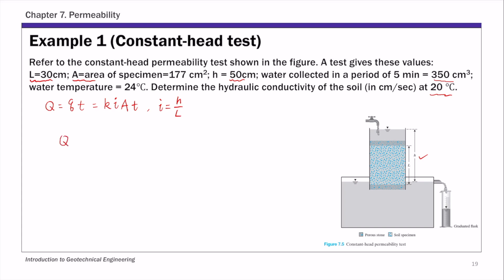Substituting everything, you have capital Q equals K times H over L times A times T. Then you can calculate the hydraulic conductivity at 24 degrees C: K equals Q times L over A times H times T. Now substituting all the numbers: Q is 350 centimeters cubed, L is 30, divided by cross-sectional area A of 177, times H of 50 centimeters, times T of 5 minutes.